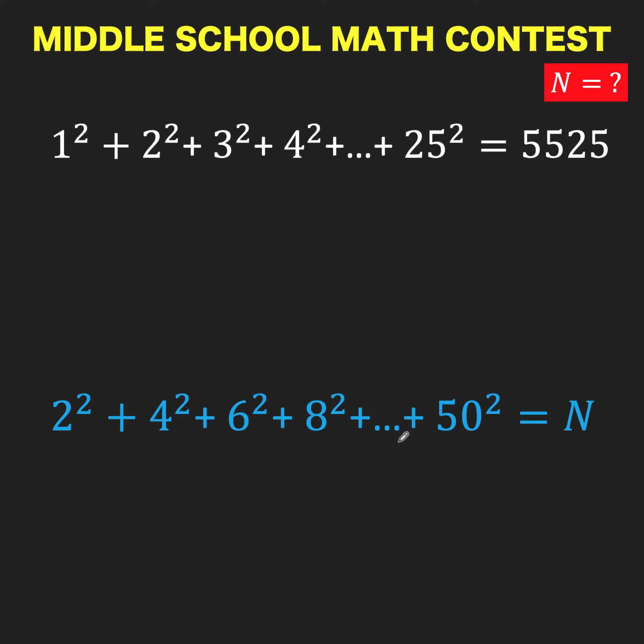Let's begin by evaluating these squared terms. 1 squared is 1, 2 squared is 4, 3 squared is 9, 4 squared is 16, until 25 squared which is 625. Then we copy the right side.